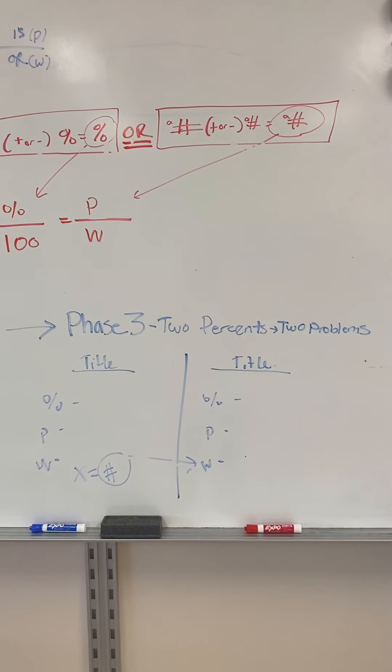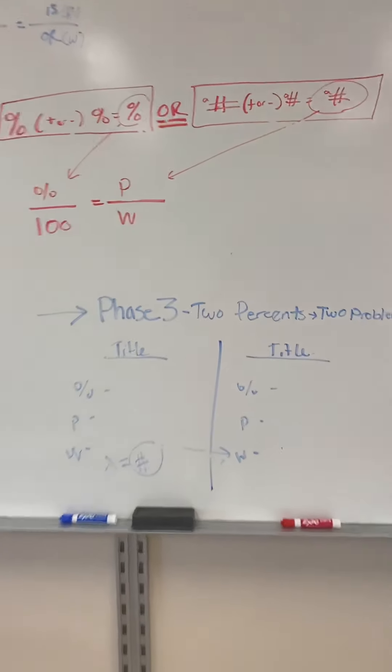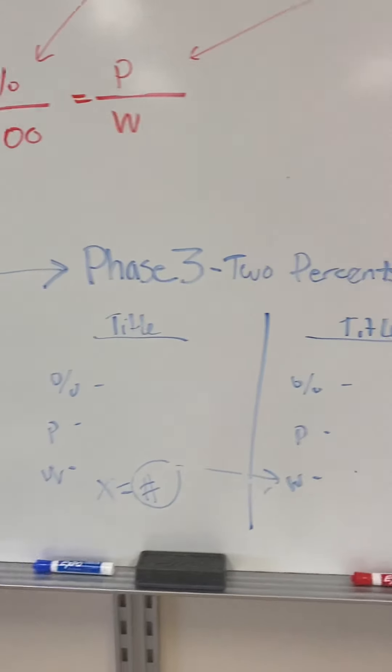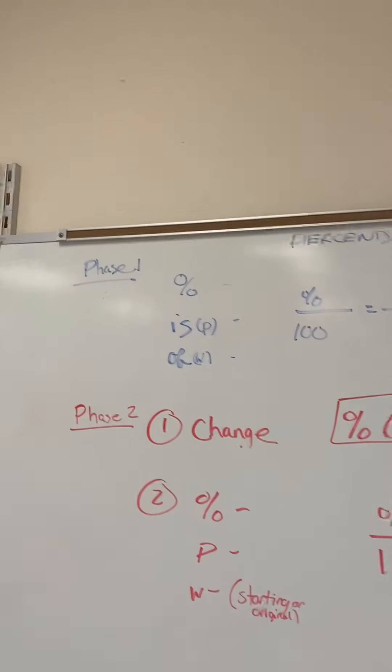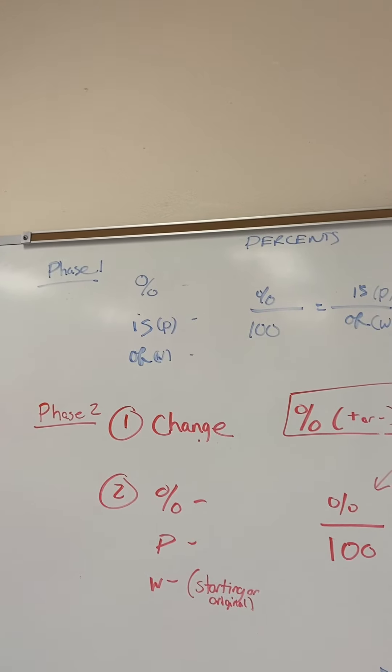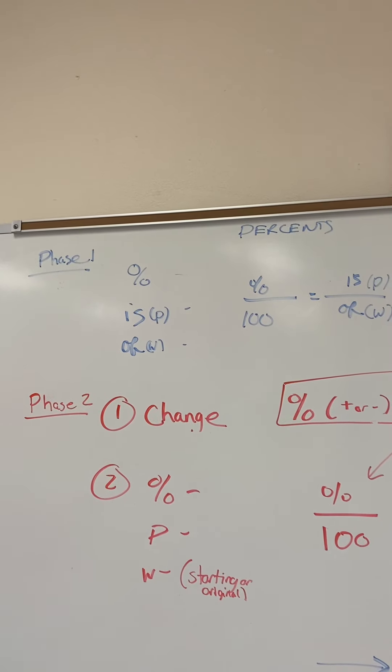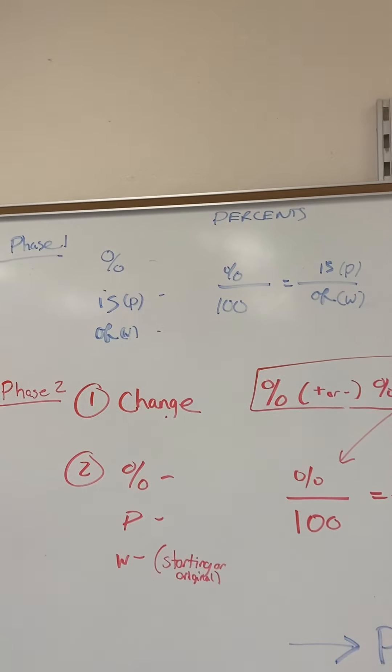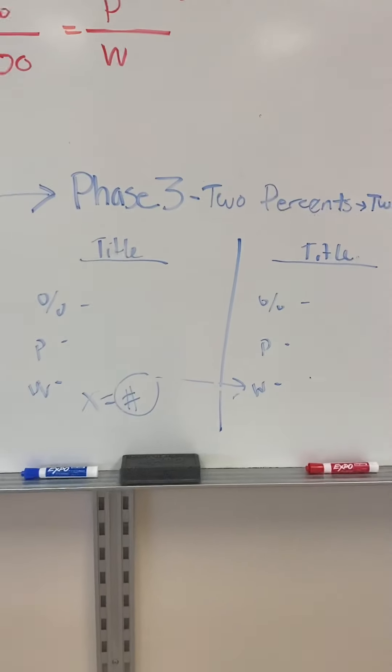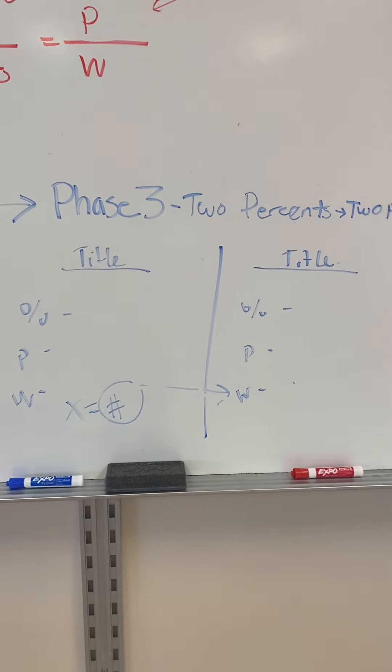Okay you guys, we are on phase three. Phase three is basically taking phase one - see how they're both in blue and clever like that - taking phase one and it's two problems in one question, right? So percent meaning tax, tip, discount, you're basically going to take it and you're going to do two separate problems.